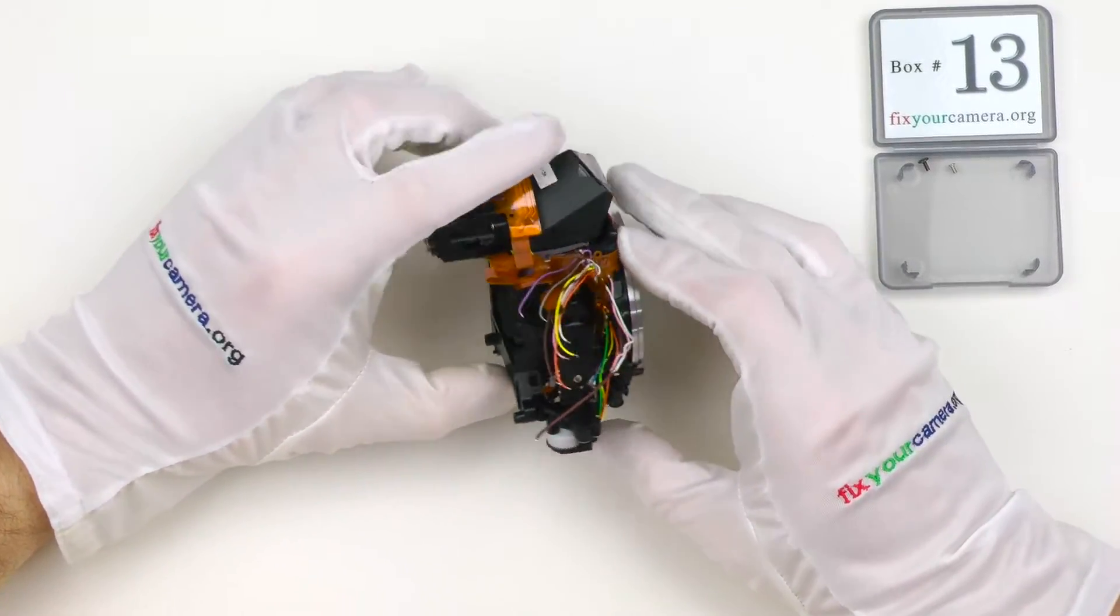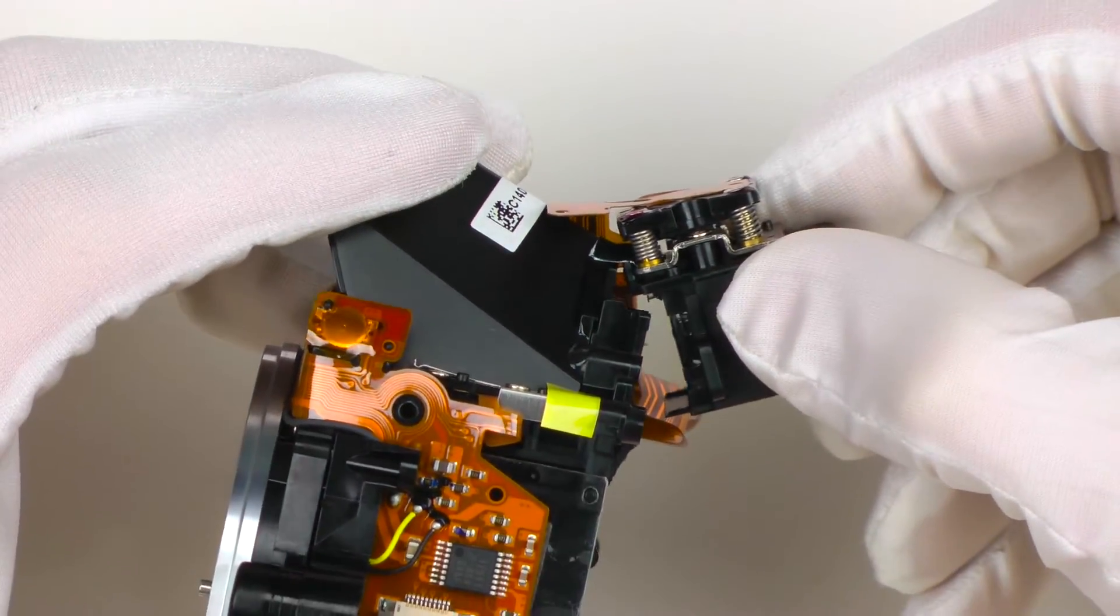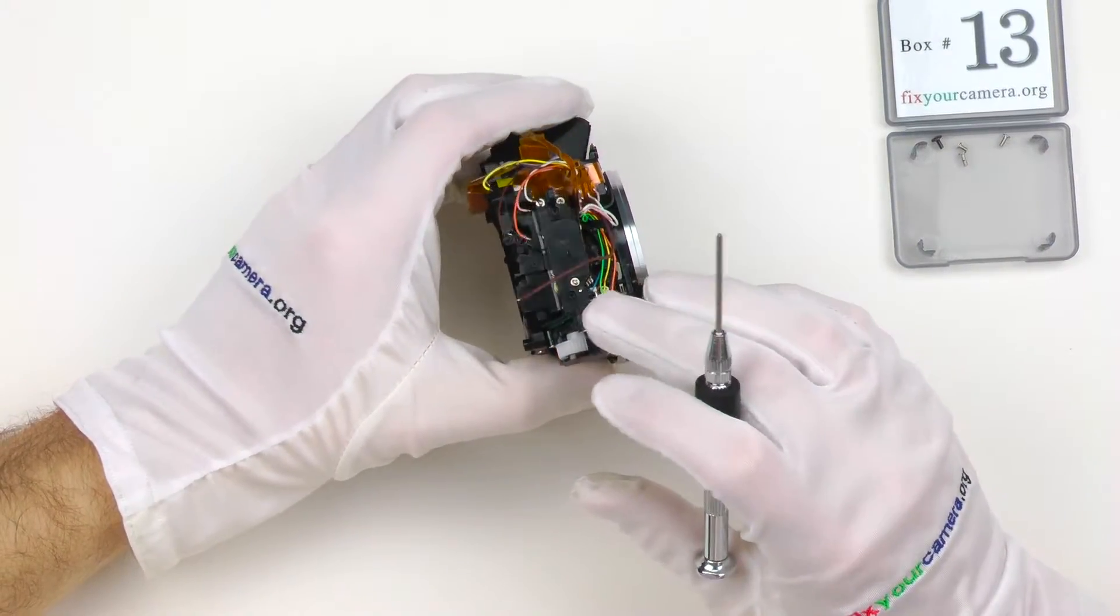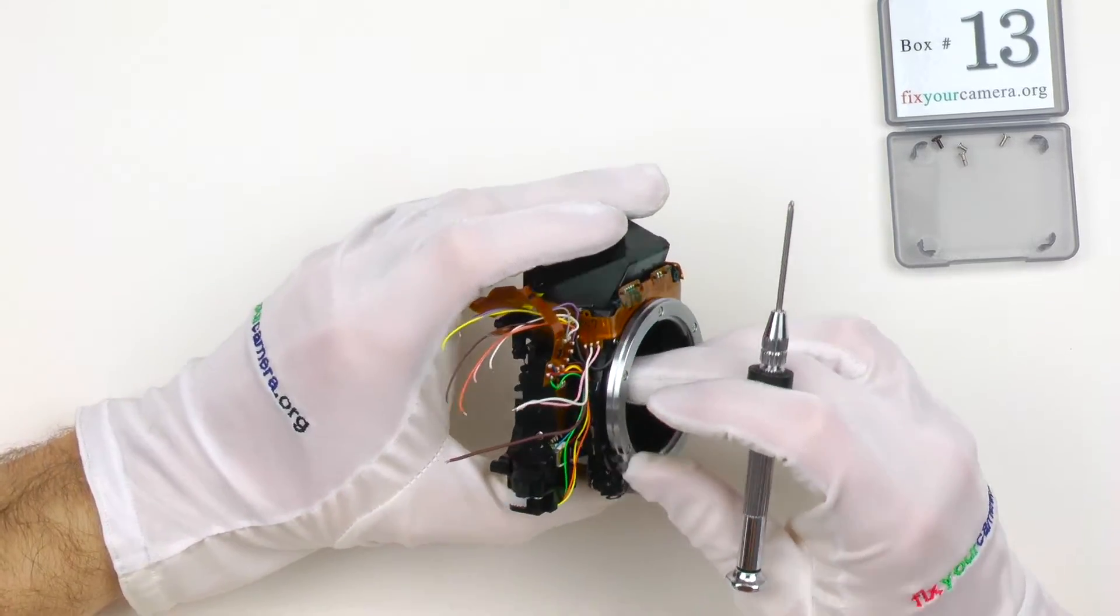Next is the aperture control mechanism. But before I'm going to remove the viewfinder just to get it out of my way. This is the part that controls this lever on Nikon cameras.